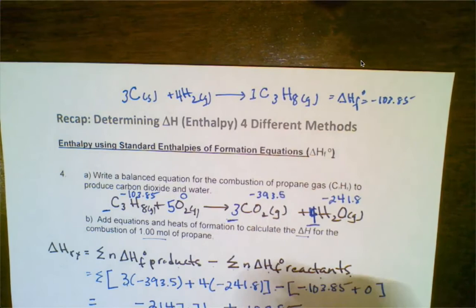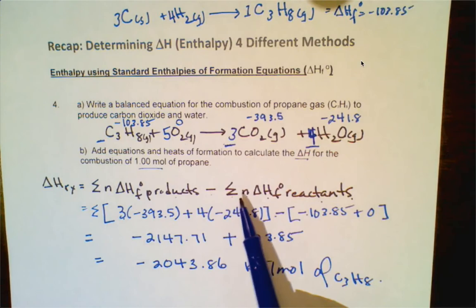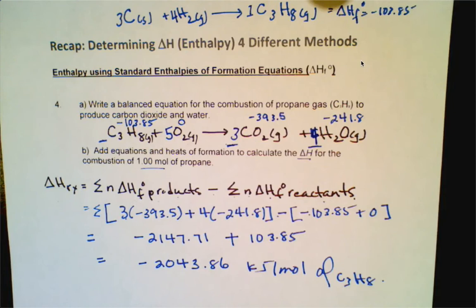That's how we use enthalpies of formation. Notice this is different from bond energies — with bond energies you do reactants minus products, but with enthalpies of formation you do products minus reactants, and it's a different table you consult. So those are the four methods as a summary. Hopefully that all makes sense, and if not, you can go back to the video tutorials that have been posted to help further clarify.